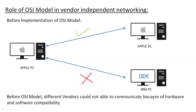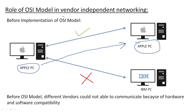Before the implementation of the OSI model, let's assume there are two friends, Sam and Bob. They have the same vendor of computers, like Apple and Apple, so they could easily forward data between them. But if there is another friend named Harry with a different vendor, Bob cannot forward data to Harry because the network was not standardized. The IBM PC could not forward data to the Apple PC due to compatibility, software, and hardware issues.